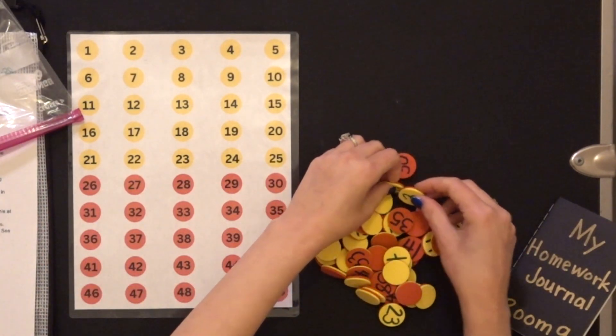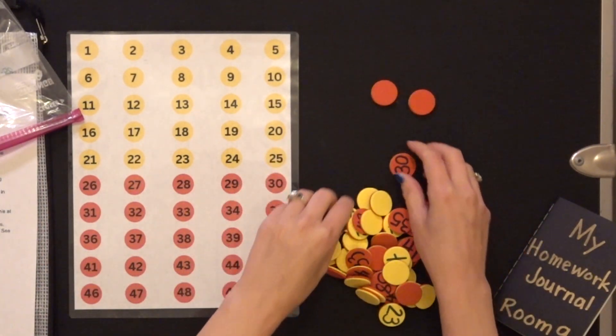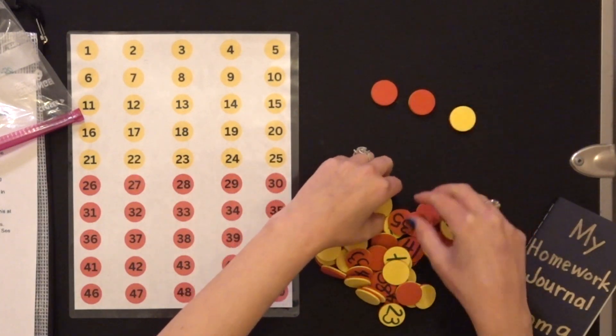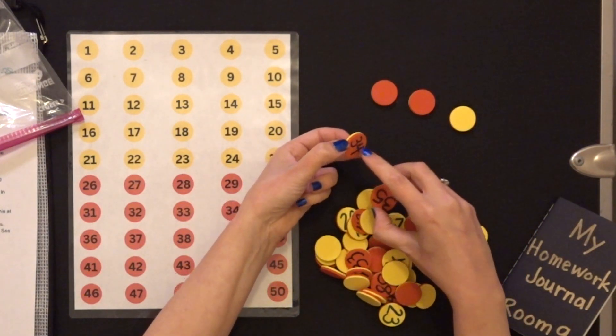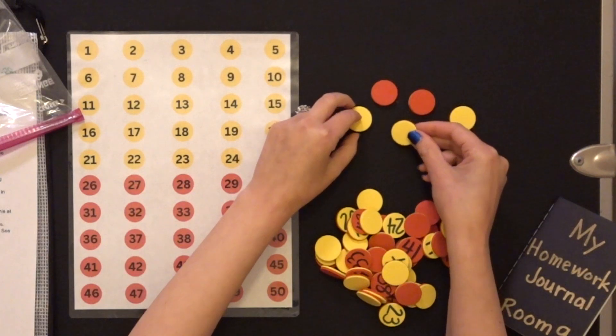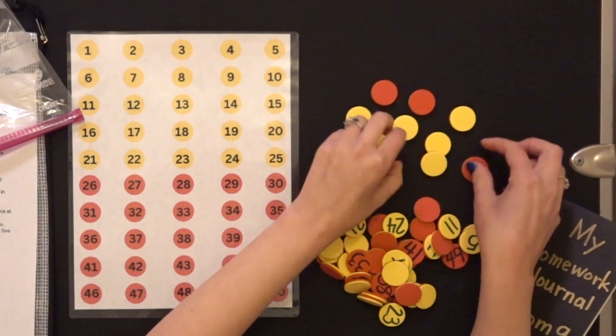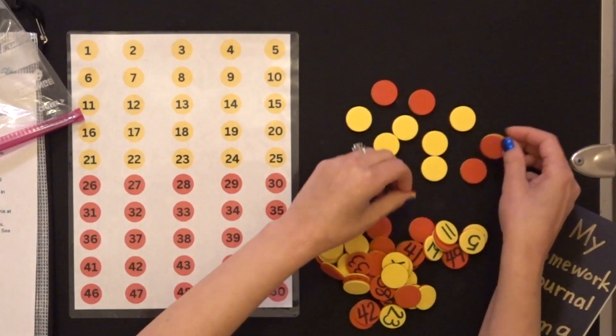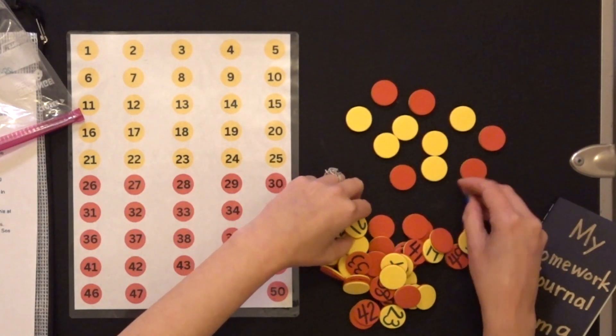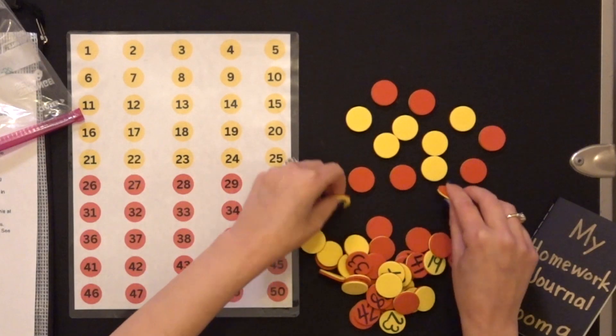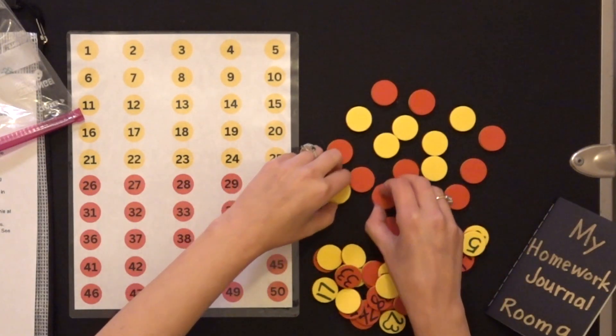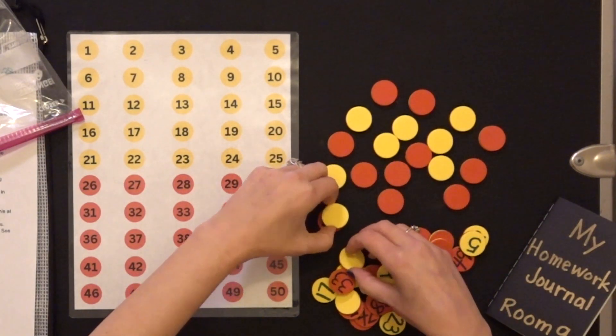And we are going to flip them over, so that way all of the numbers are facing down. Some of the numbers are on the red side, some are on the yellow side. So all you need to do is make sure that they're all facing down. Doesn't matter, you can put all the red ones together if you want, you can put all the yellow ones together, it doesn't matter how you do it, just as long as we don't see a number.